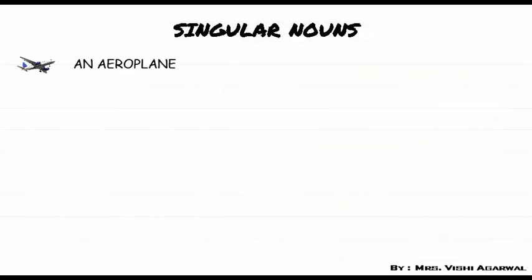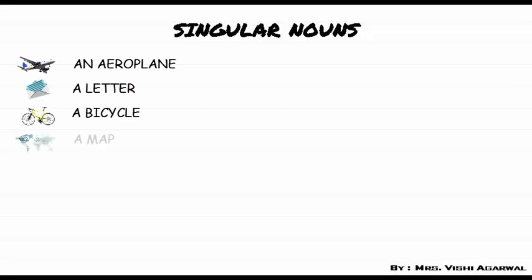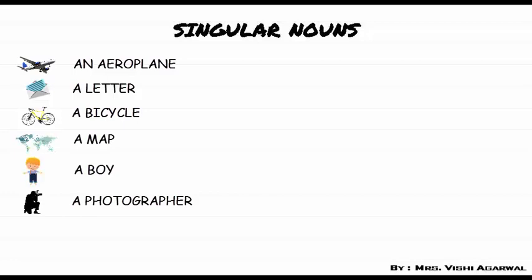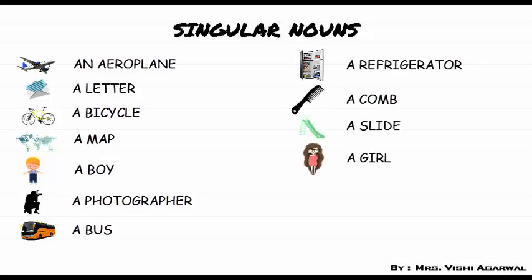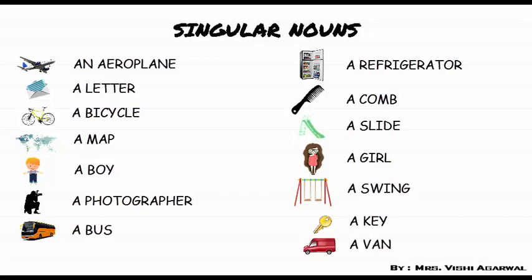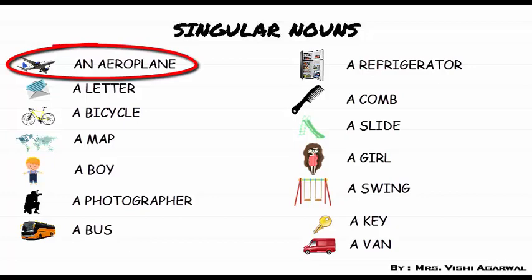There are also singular nouns: an aeroplane, a letter, a bicycle, a map, a boy, a photographer, a bus, a refrigerator, a comb, a slide, a girl, a swing, a key, a van. Here in all these words you can see that we have used 'an' only with aeroplane.